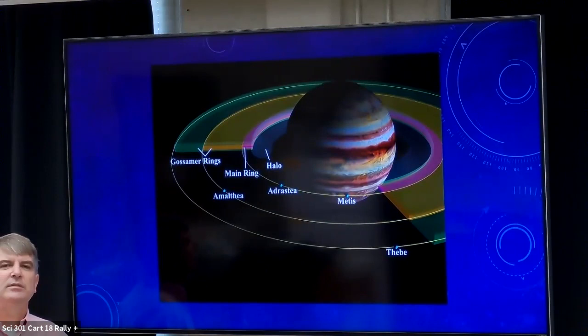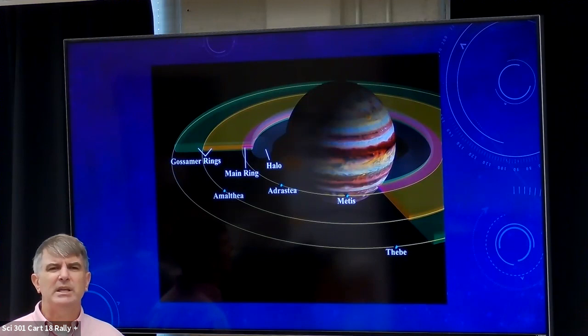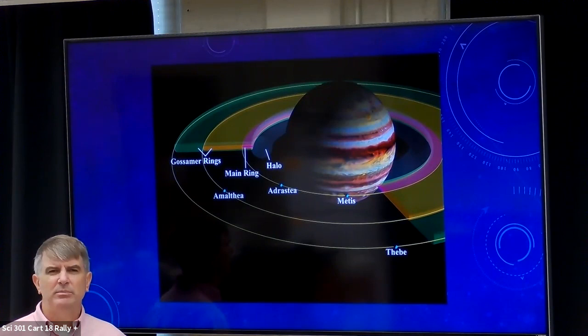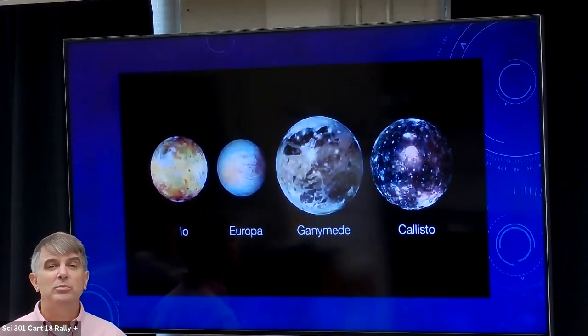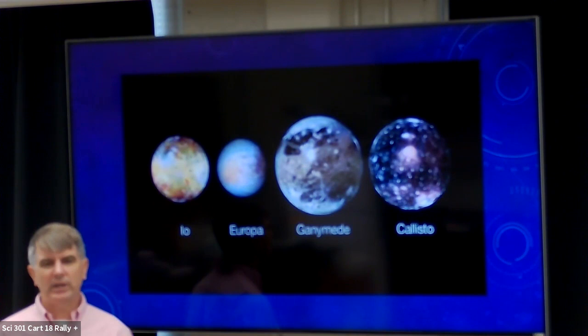Probably the more interesting things about these planets are their moons. The gas planets themselves aren't that interesting — they're just big balls of gas; we're never going to land on them. But the moons of Jupiter — Io, Europa, Ganymede, and Callisto — are really the more interesting features of these planets.